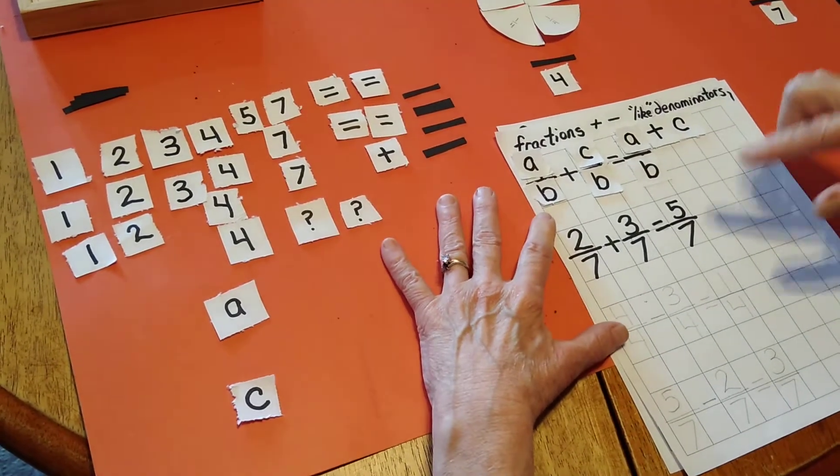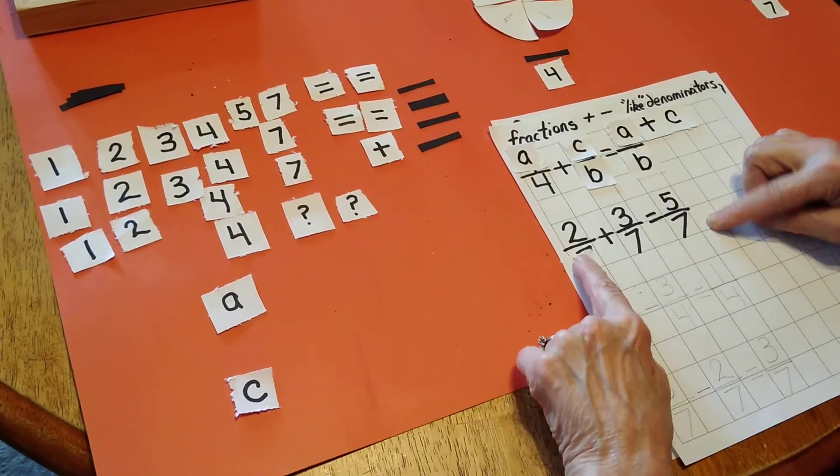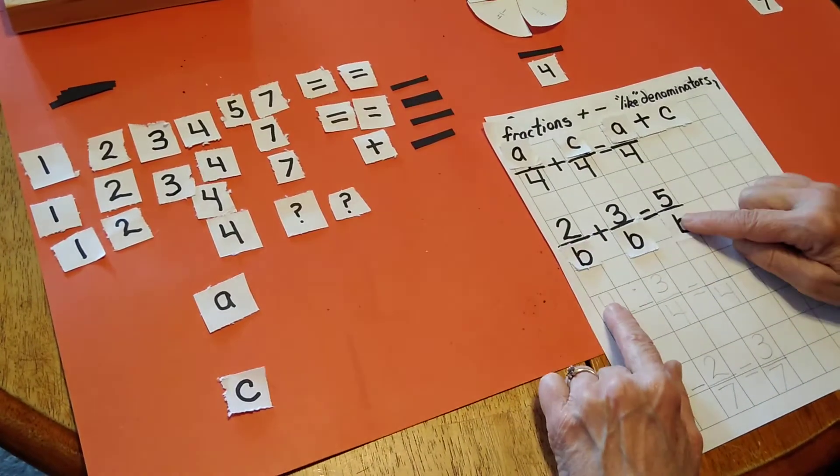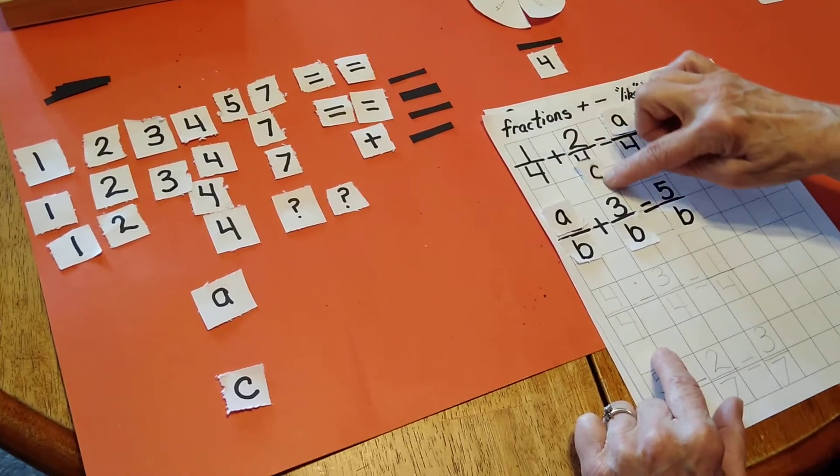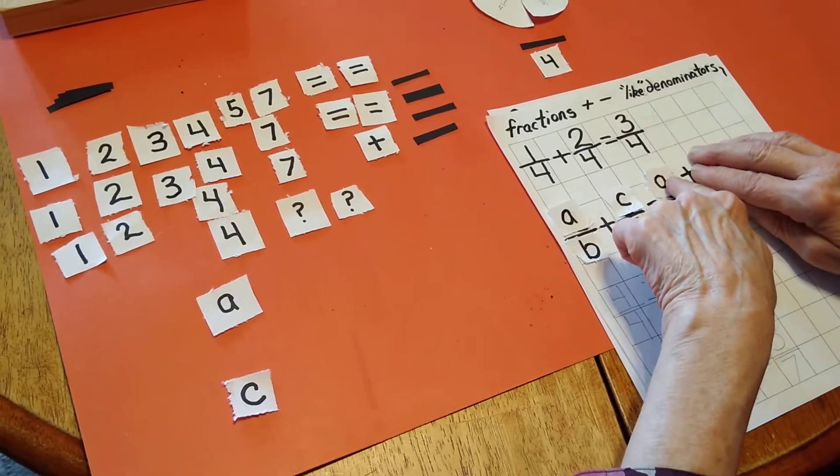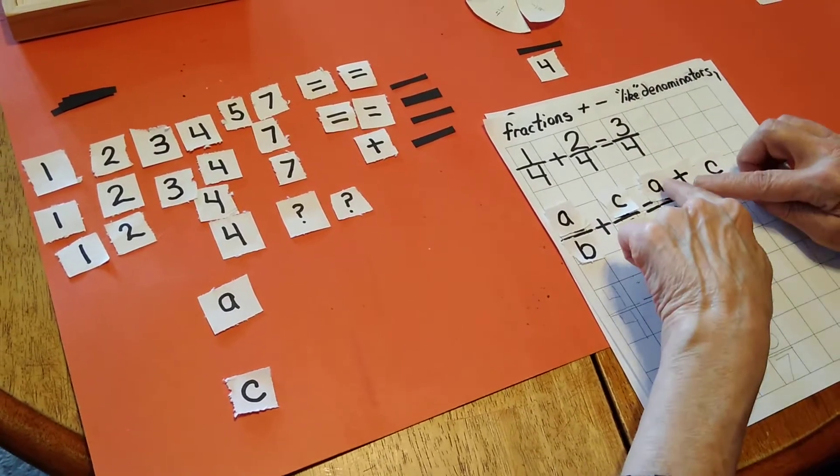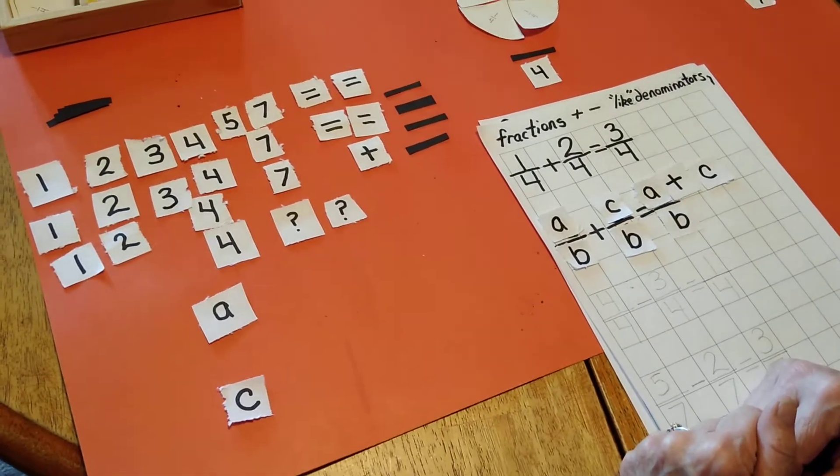Let's see if the pattern also can be written here. I have the same denominator. I have my first numerator, the next numerator, and when those two are added together, I have the numerator sum. Yes, this pattern holds true.